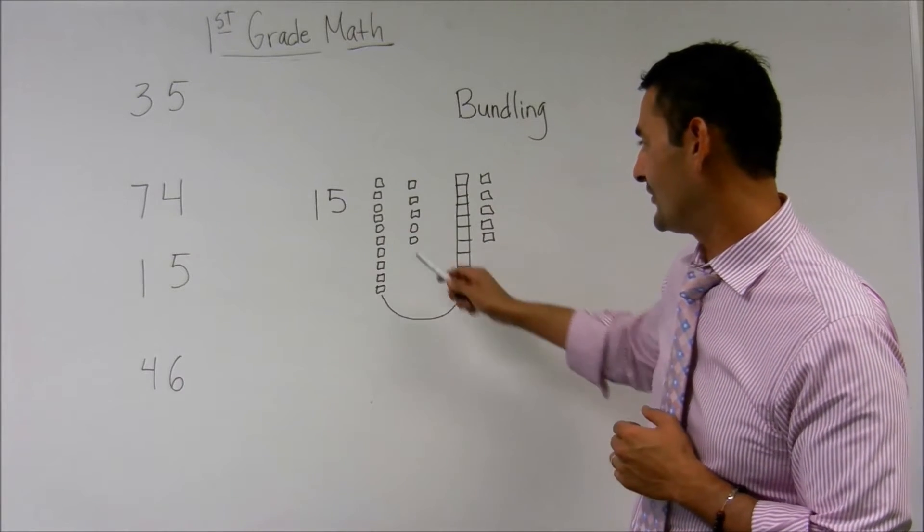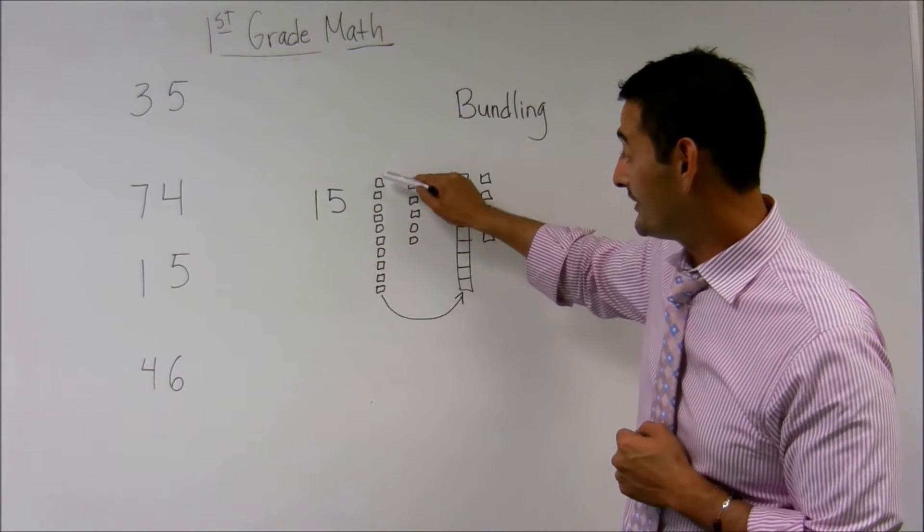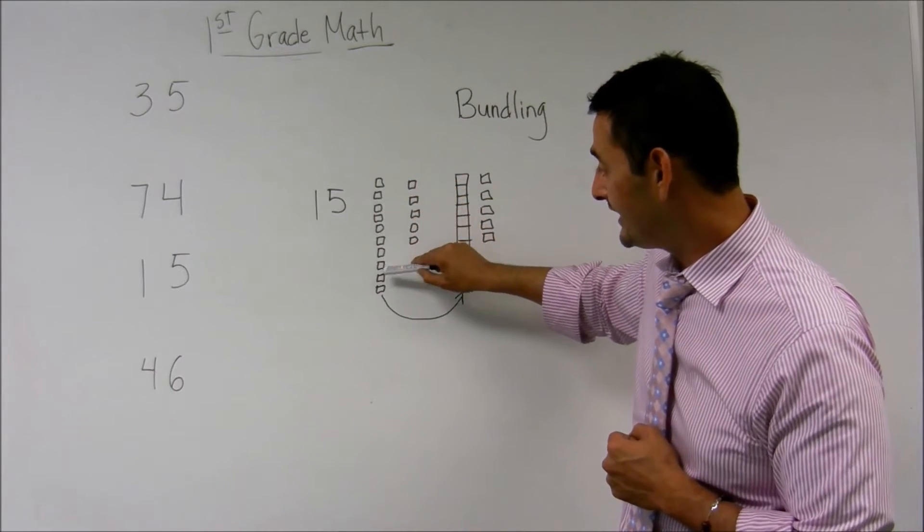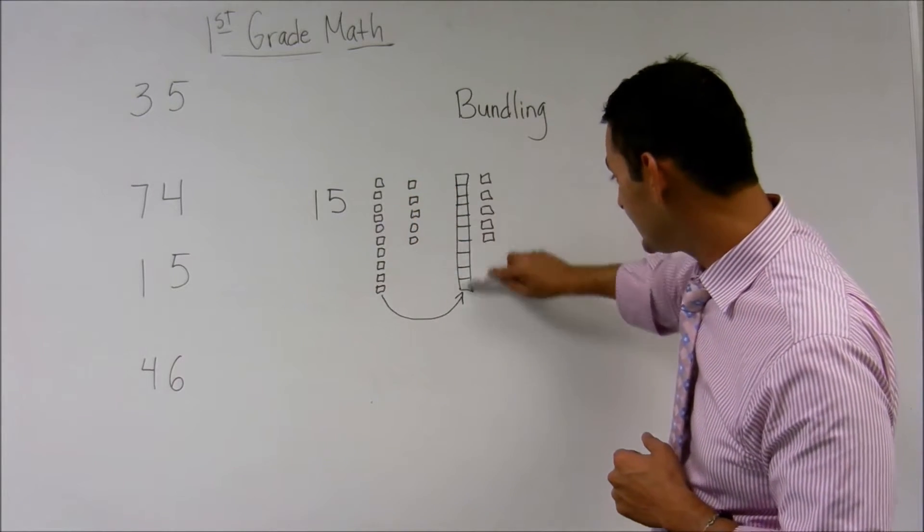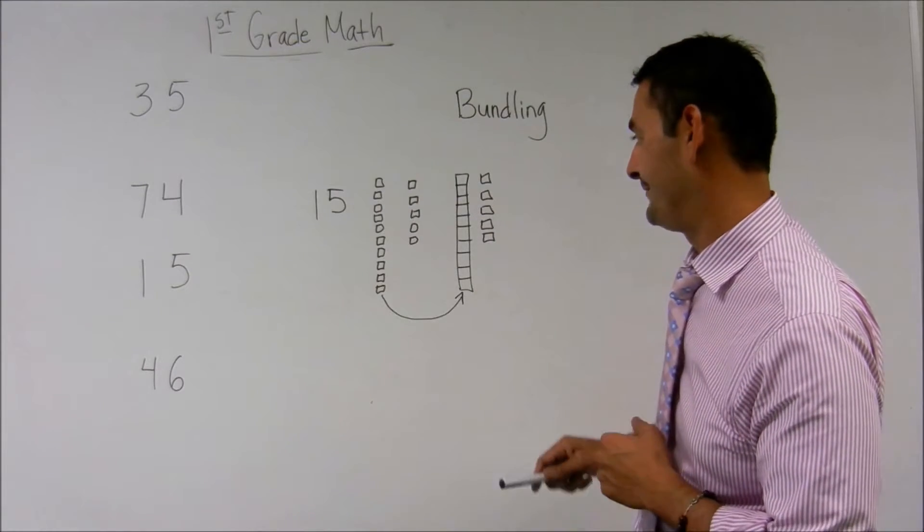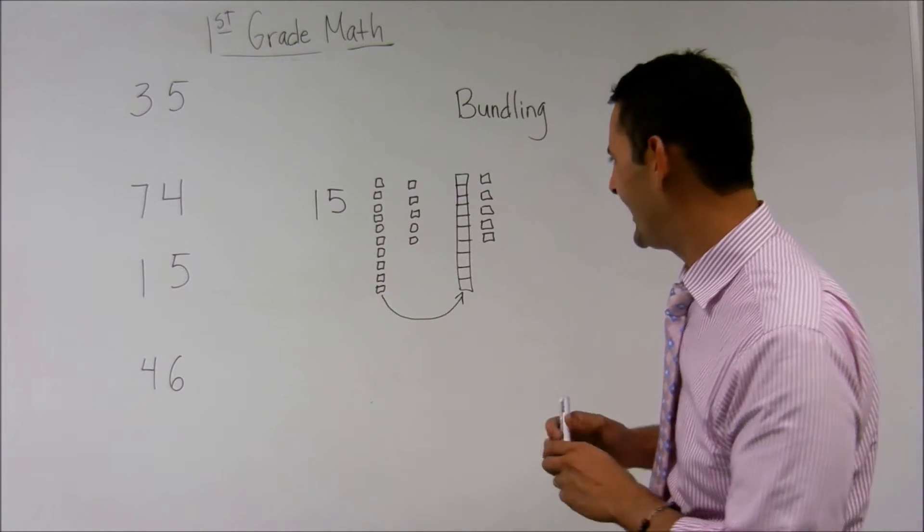Now what's easier, looking at them like this, and counting one, two, three, four, five, six, seven, eight, nine, ten, or just knowing that this bundle right here equals ten. This is much easier, right?